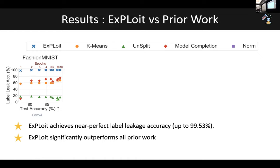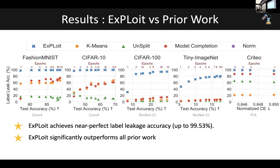There are two key observations. First, our attack EXPLOIT achieves near-perfect label leakage accuracy — we get very close to 100% accuracy for this task. Second, EXPLOIT significantly outperforms other prior works, with a significant gap between our work and prior works. We repeat our experiments across different model architectures and datasets and show that the same results hold true.